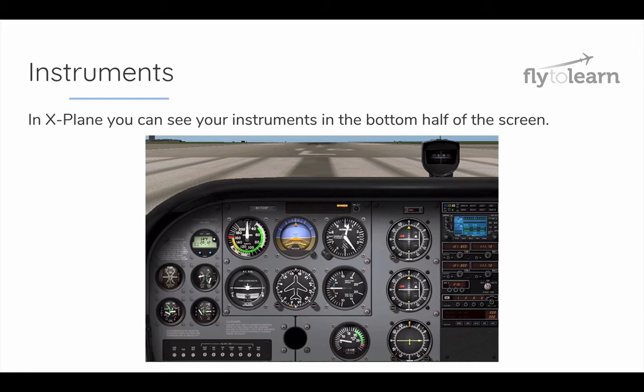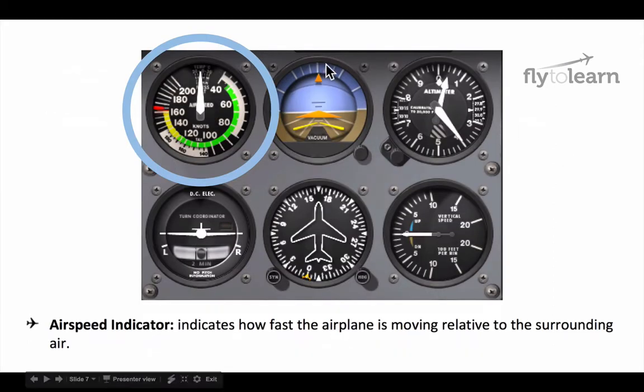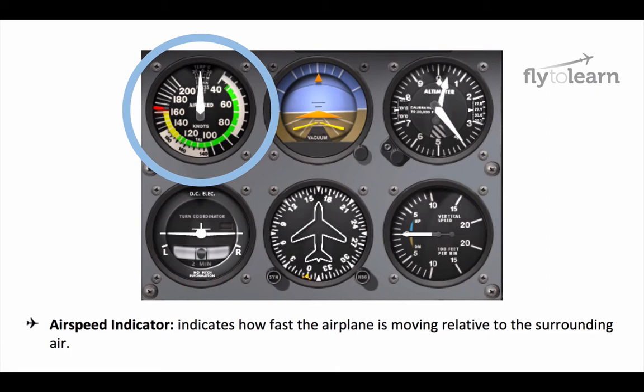First, let's take a look at the instruments on your instrument panel. These will be on the bottom half of your screen the majority of the time that you're flying. The first instrument we want to point out is the airspeed indicator. This indicates how fast the airplane is moving relative to the surrounding air. In a future lesson, we will discuss the difference between your indicated airspeed and your true airspeed.